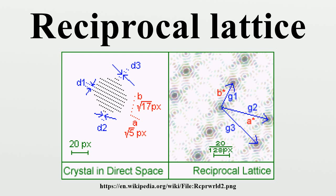The above definition is called the physics definition, as the factor of 2π comes naturally from the study of periodic structures. An equivalent definition is the crystallographer's definition.